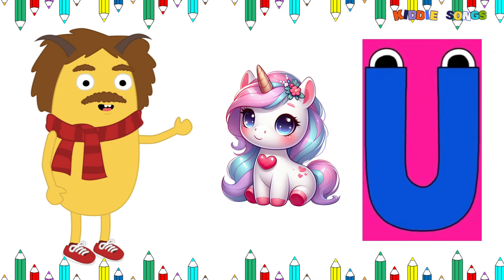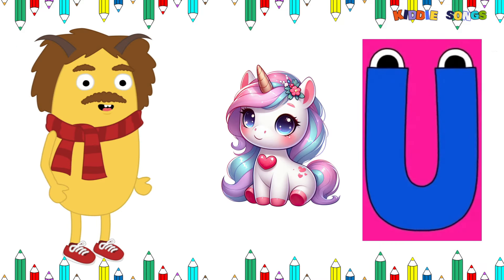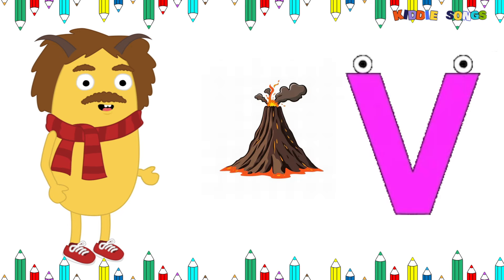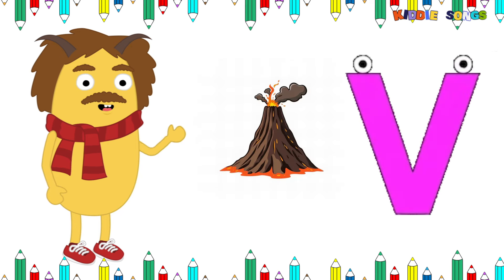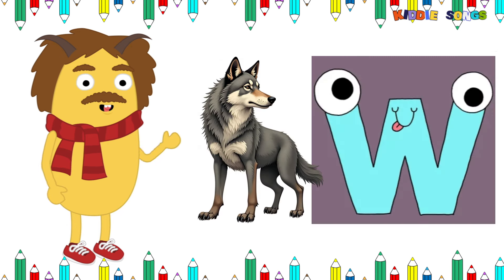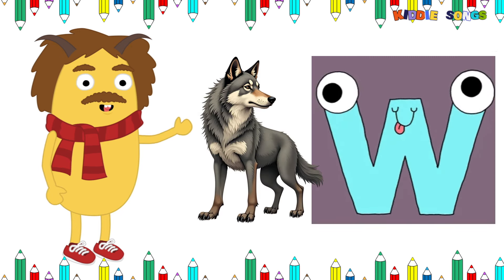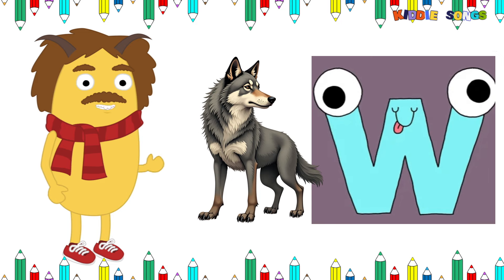U is for unicorn. U, u, unicorn. V is for volcano. V, v, volcano. W is for wolf. W, w, wolf.